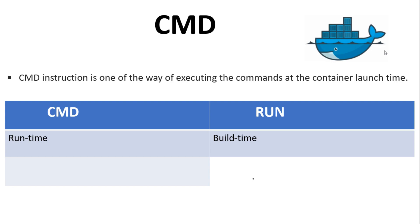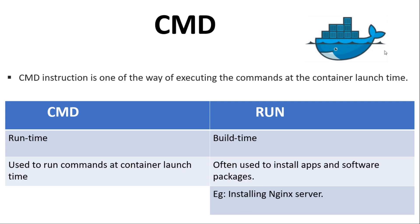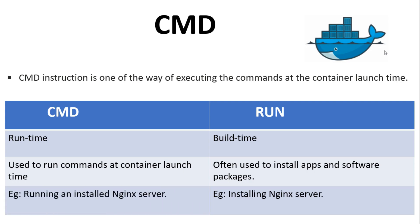The main usage of RUN instruction is to install applications and software packages inside the Docker image, while CMD instruction is mainly used to start already installed software or applications at container run time. For example, installing the nginx server in the Docker image is done as part of the RUN instruction, while running the installed nginx server is done via CMD instruction.